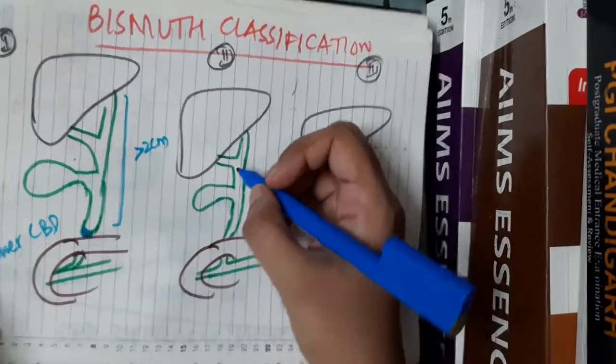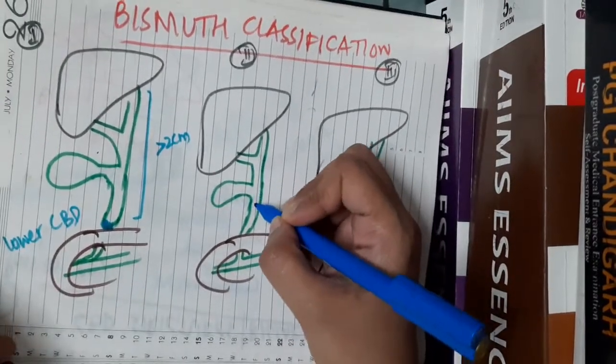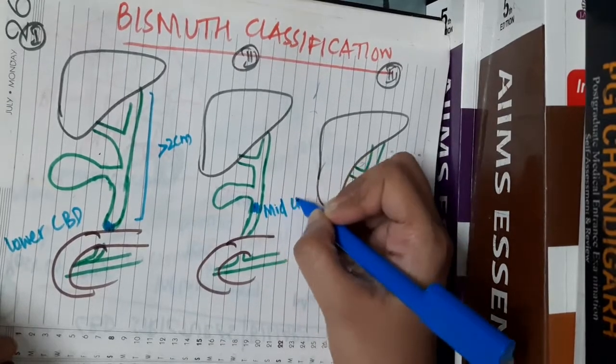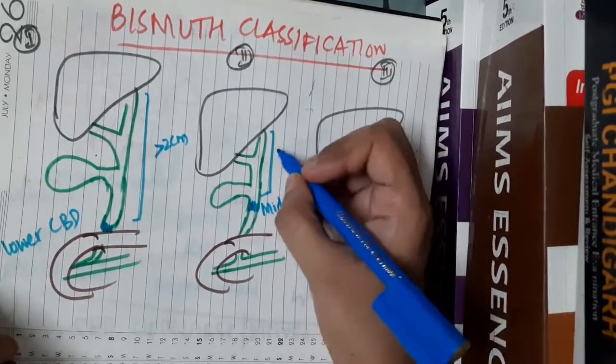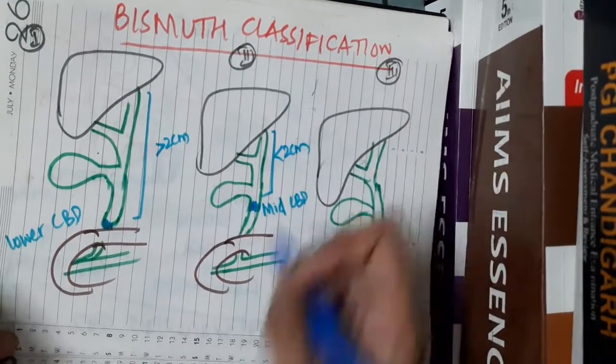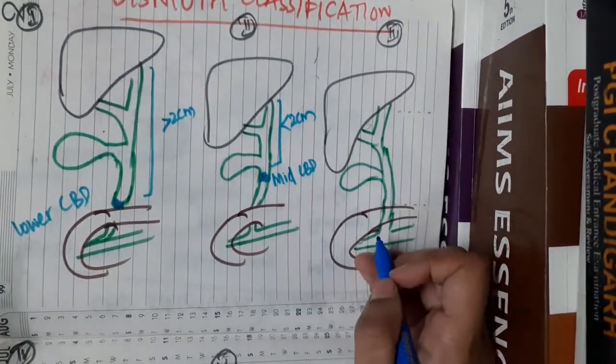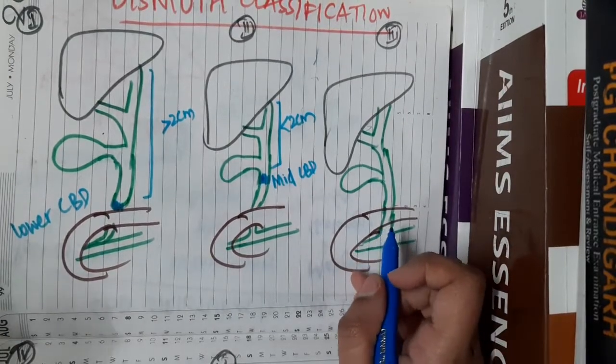In type 2, the stricture is present in the middle common bile duct, and the proximal stump is less than 2 cm. This is type 2 of Bismuth classification of biliary stricture.